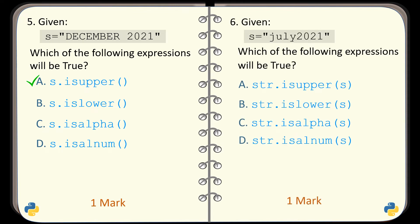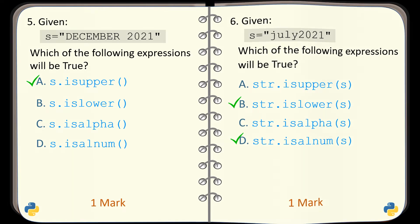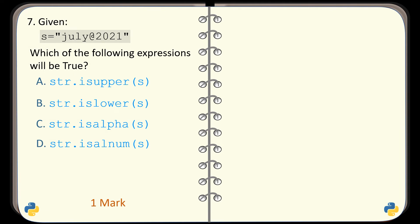Question number 6. For the given string S, which of the given expressions are true? The answer is option B and option D. Question number 7. See the given string S and identify which of the following expressions will be true. The answer is option B.